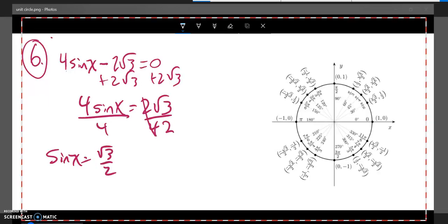So I'm looking for angles that give me a height of root 3 over 2, which would be here and here. So it looks like x must be pi over 3 and 2 pi over 3. All right.